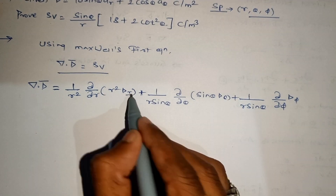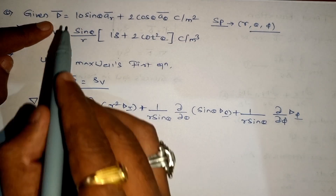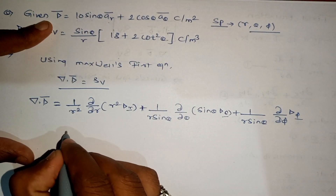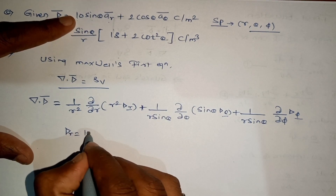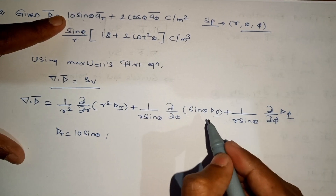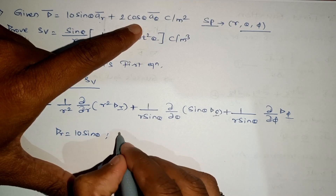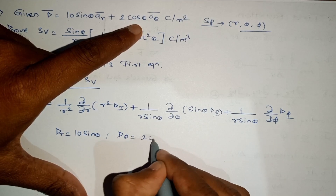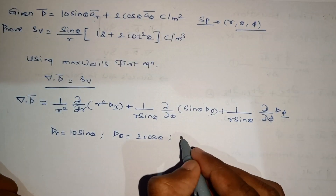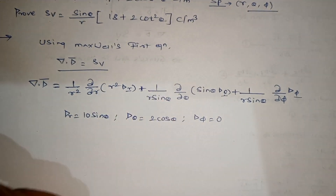From the given D-bar, the component along r has magnitude 10 sin θ, so D_r equals 10 sin θ. The component along theta is D_θ equals 2 cos θ. The phi component is not given, so D_φ equals zero.